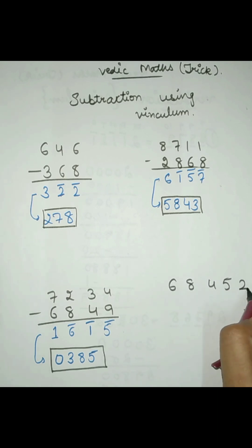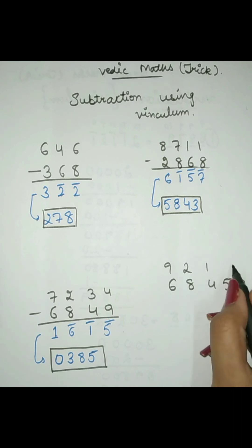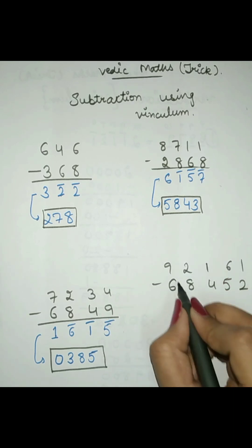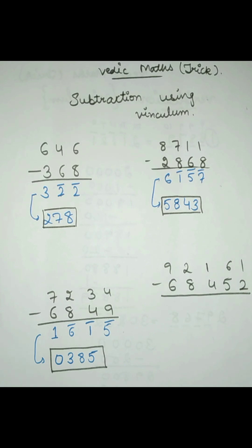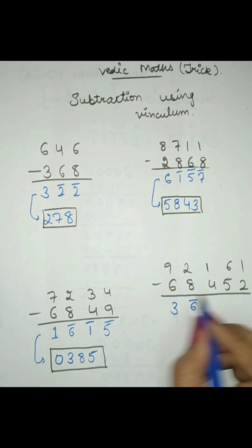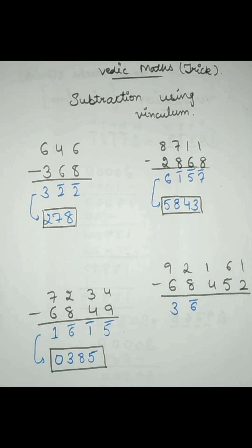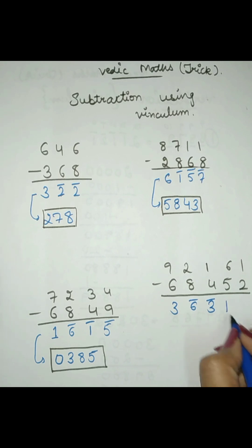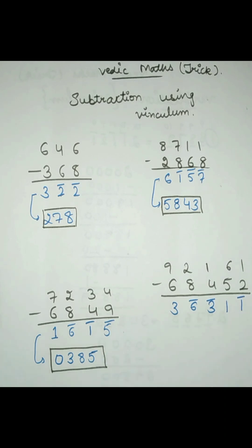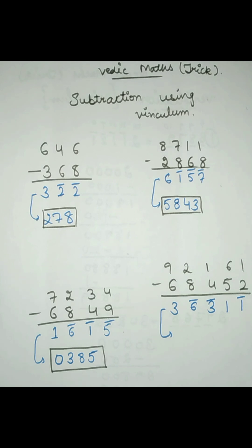Now next, if we want to subtract 68452 from 92161, we again apply the rule of vinculum. 9 minus 6 is 3. Then 2 minus 8 is not possible, and after subtracting we get minus 6, written as 6 bar. And 1 minus 4 will become minus 3, written as 3 bar. And 6 minus 5 is 1. And 1 minus 2 is minus 1, written as 1 bar.